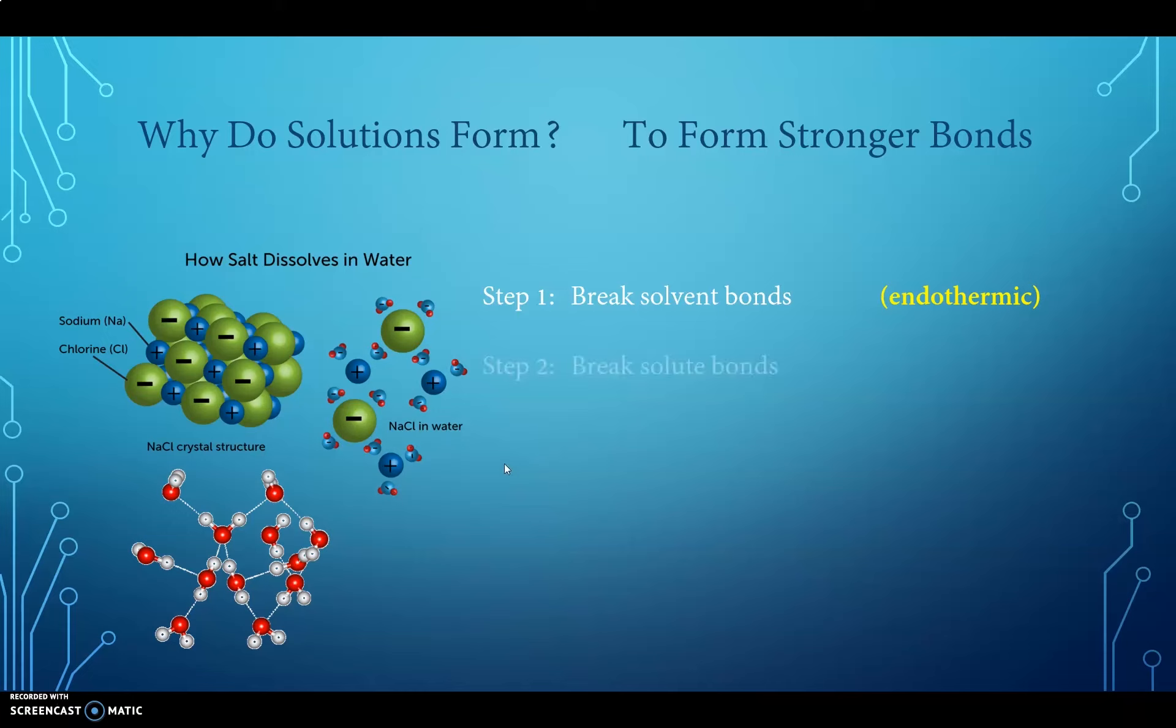The second step is to break the solute bonds. So we need to separate the sodium and chloride ions from each other, and just as with the water, breaking those bonds is going to take energy, which means it's also going to be an endothermic process. So at this point, things aren't looking real good, because we know that salt spontaneously dissolves in water, and we learned back in chapter 7 that all spontaneous processes have to be exothermic, yet so far, it's completely endothermic. So let's look at the third step.